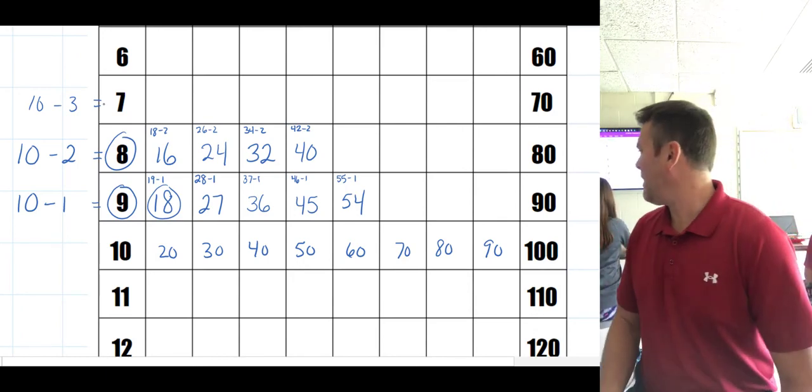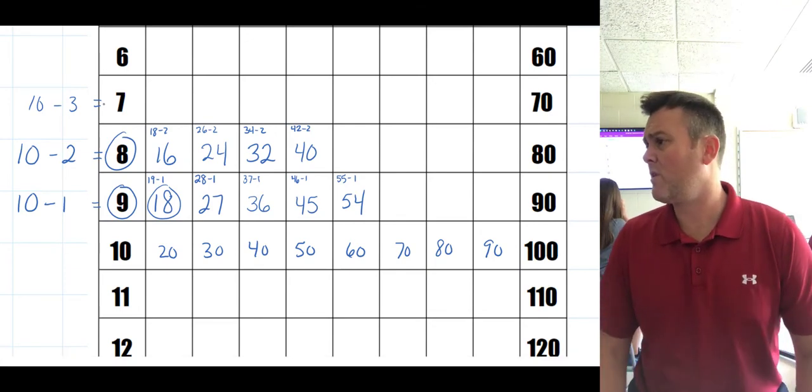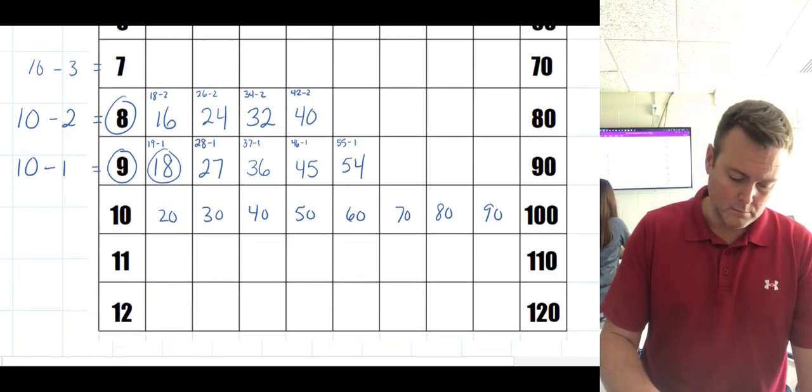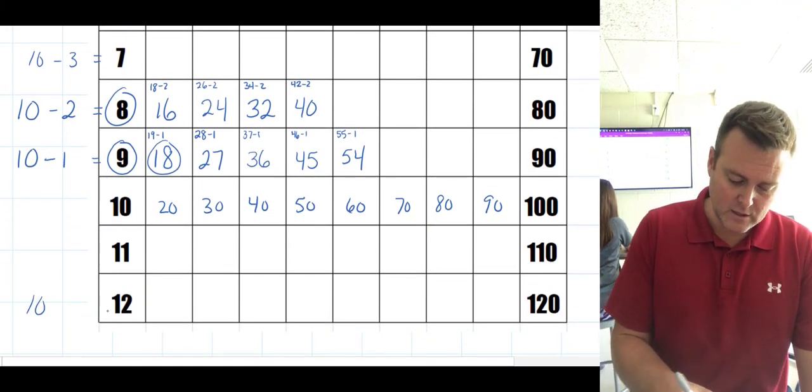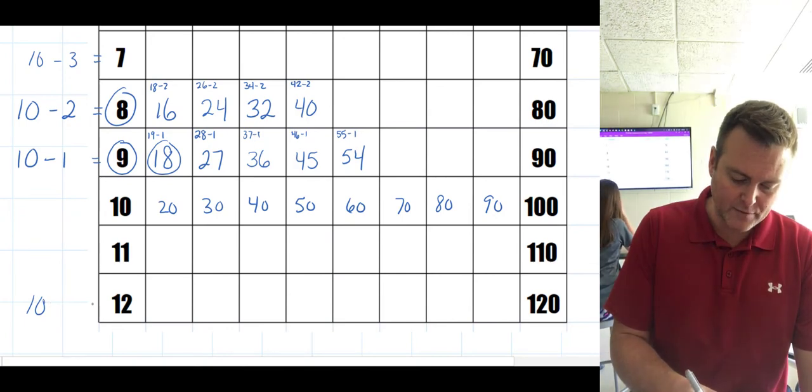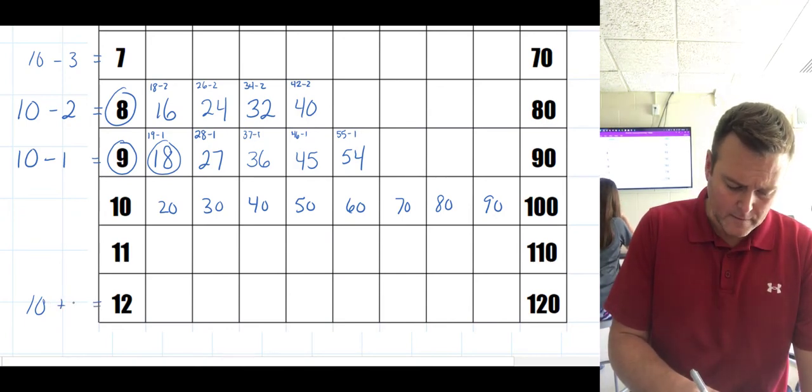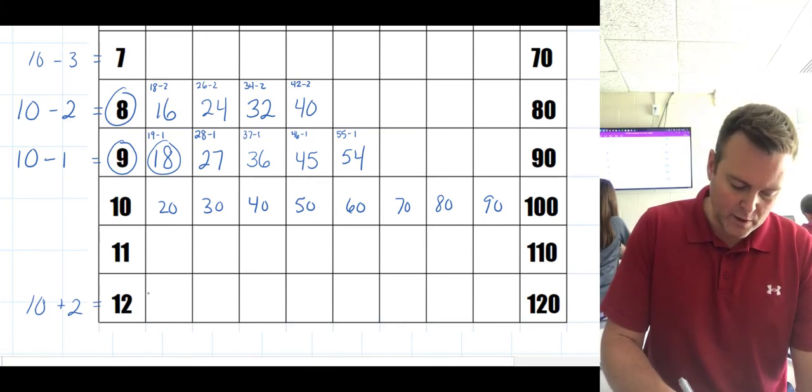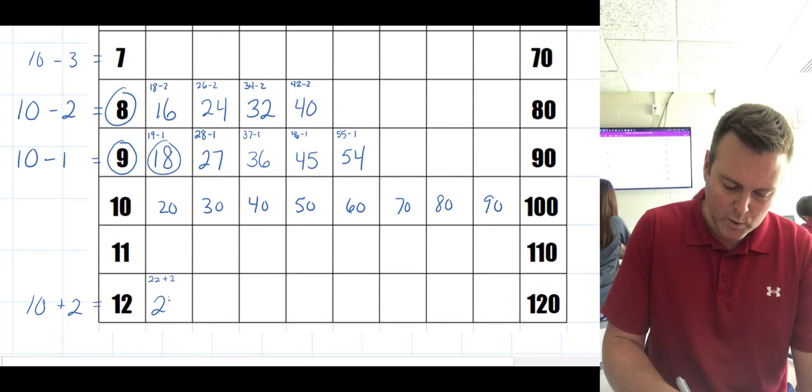But Mr. Parks, what happens with 12? Twelves are harder. Well, if we want to still use tens, it's not subtracting from 10—what do we have to do in order to make it 12? Add 2. So 10 more than 12 is 22, but this time we're not subtracting, we're adding 2 to make 24.